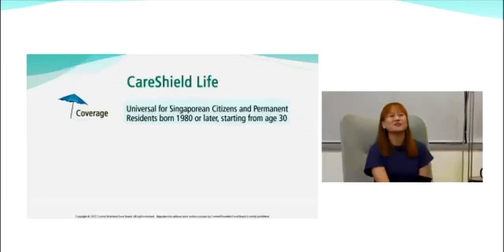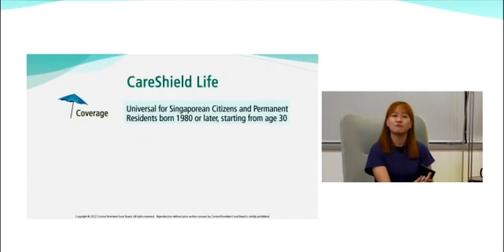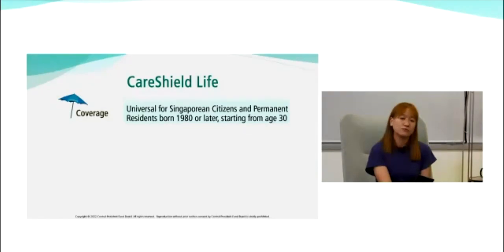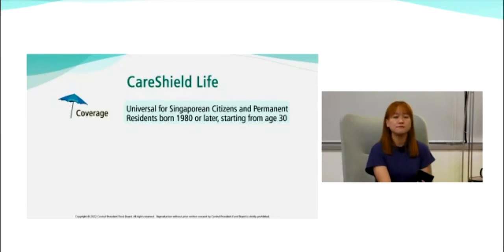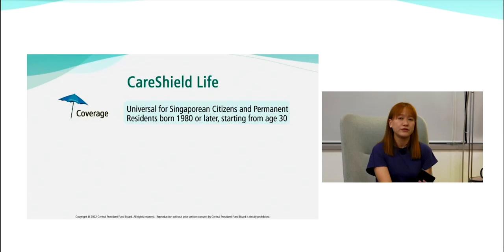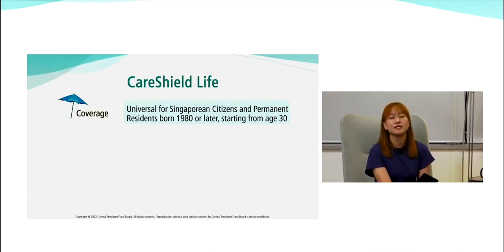CareShield Life comes in for the unfortunate event that someone is severely disabled. It provides support for the severely disabled — defined as being certified by a doctor as unable to perform at least three of the daily activities, such as feeding, transferring, or wearing clothes. CareShield Life is universal for Singapore citizens and permanent residents born in 1980 or later, starting from age 30.